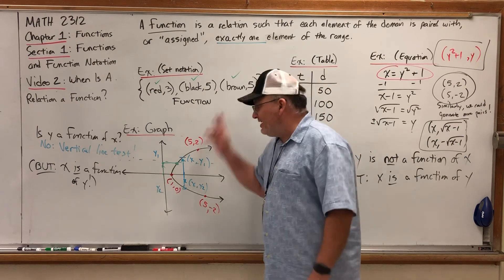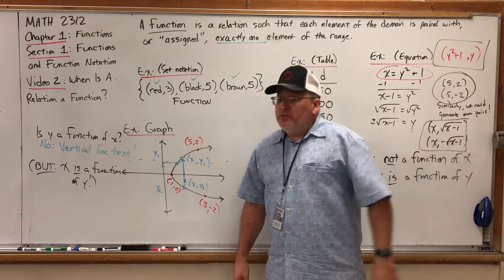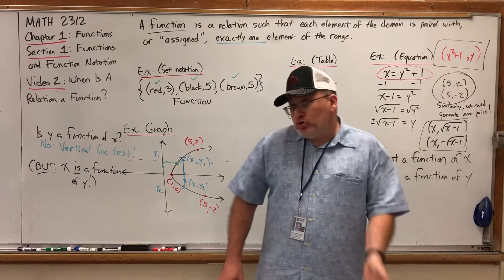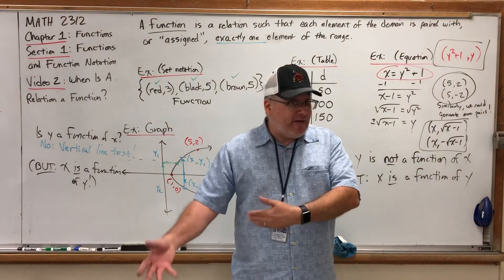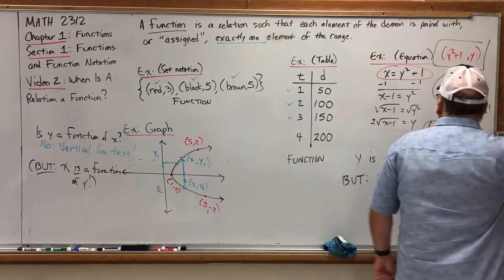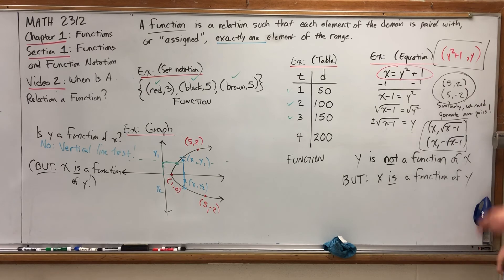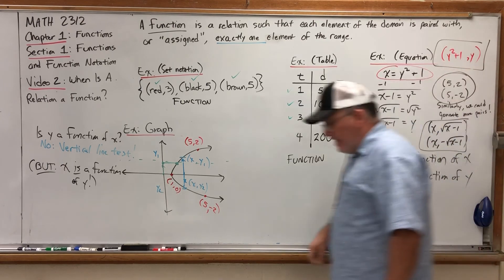The vertical line test answers the question, is Y a function of X? But just keep in mind, that although traditionally domain is X values and range is Y values, that choice is completely arbitrary. In this equation, Y is not a function of X, because one X can generate multiple Ys, but X is a function of Y, meaning give me a Y value, and I'll calculate one and only one X value.